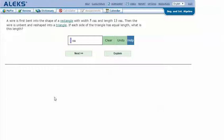A wire is first bent into the shape of a rectangle with width 5 centimeters and length 13 centimeters. Then the wire is unbent and reshaped into a triangle. If each side of the triangle has equal length, what is this length?